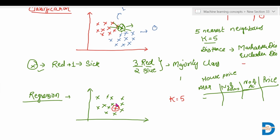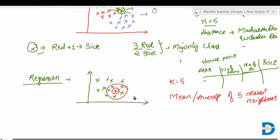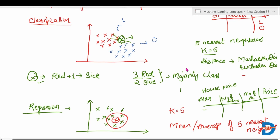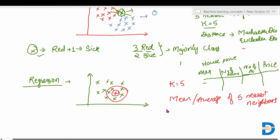Five nearest neighbors are considered. For regression, it will find the mean or average of these five neighbors. For example, one point has a price of 50 lakhs, another 52 lakhs, another 52.5 lakhs, and another 51 lakhs. The output for the new point will be the mean of all these points. So for classification, KNN uses majority class, and for regression, it takes the mean of all nearest neighbor values. This is the simple concept behind the KNN algorithm.